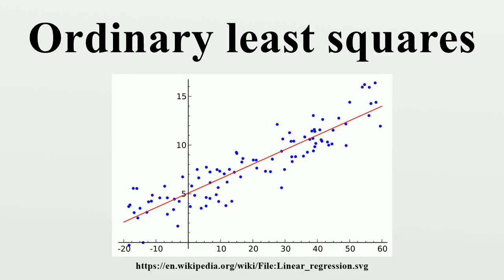In statistics, ordinary least squares or linear least squares is a method for estimating the unknown parameters in a linear regression model.